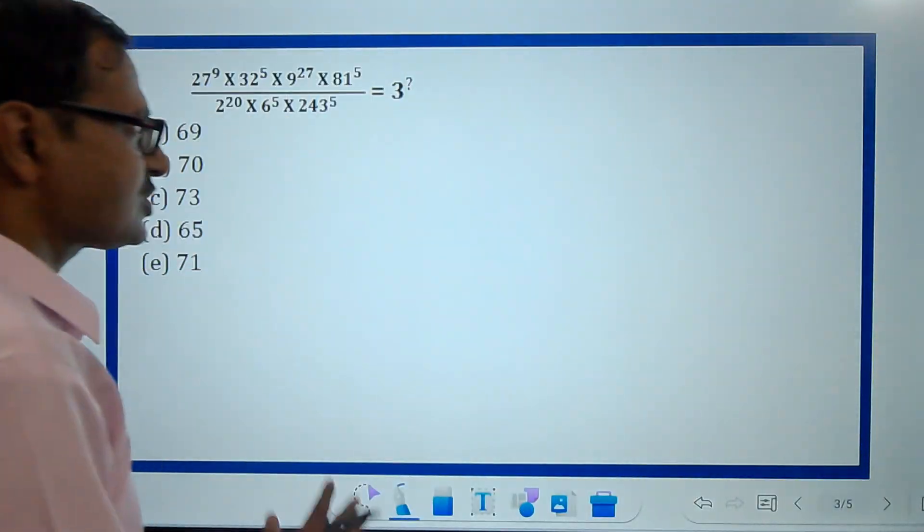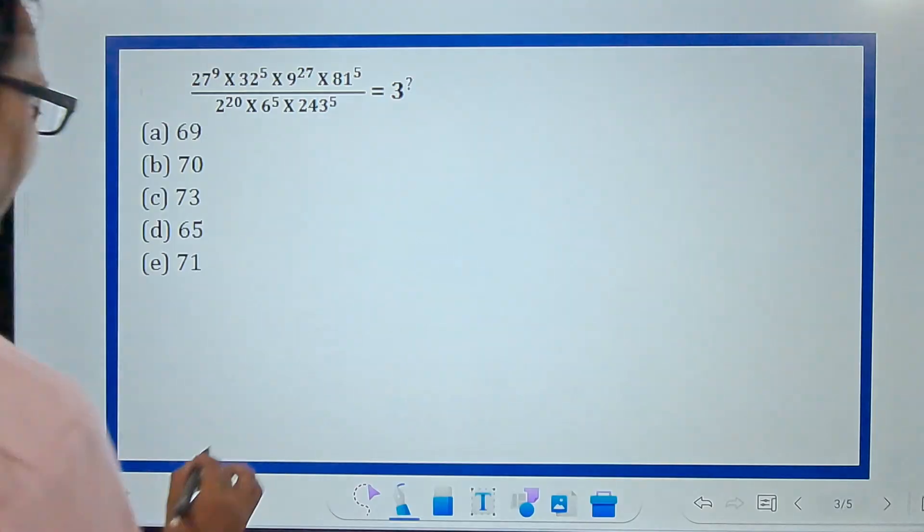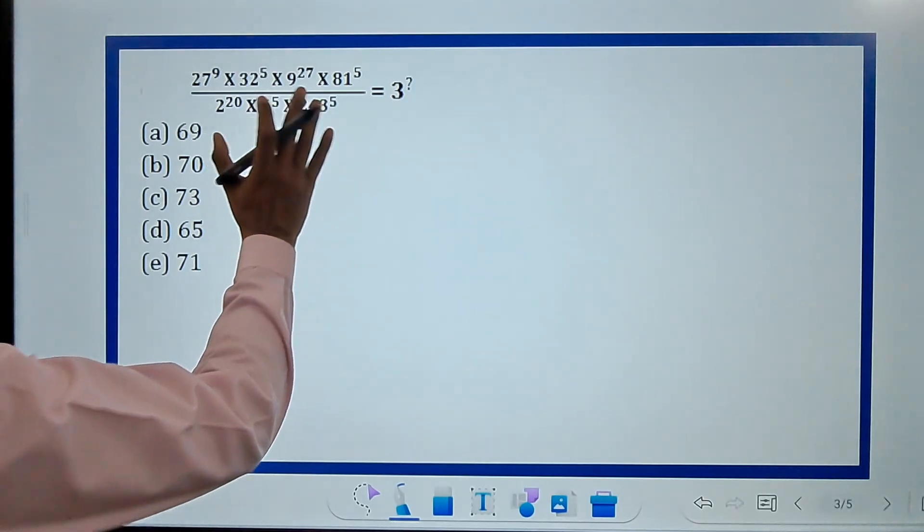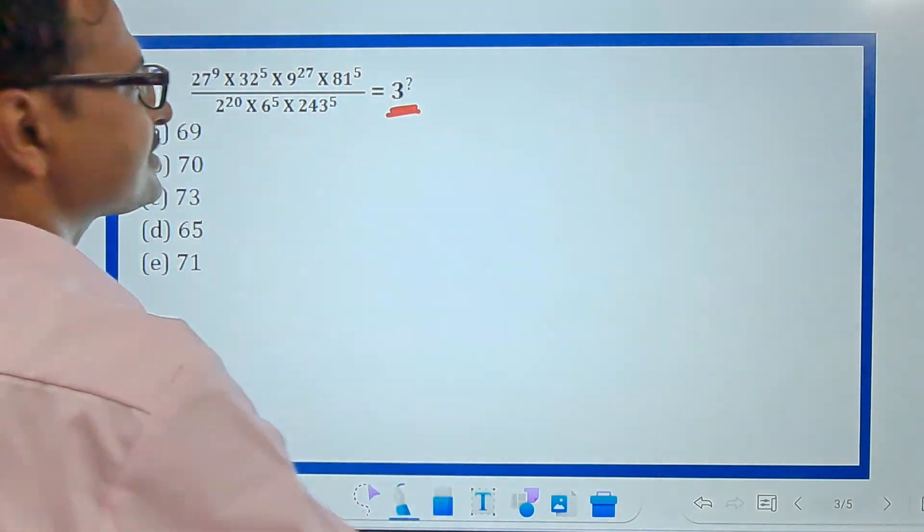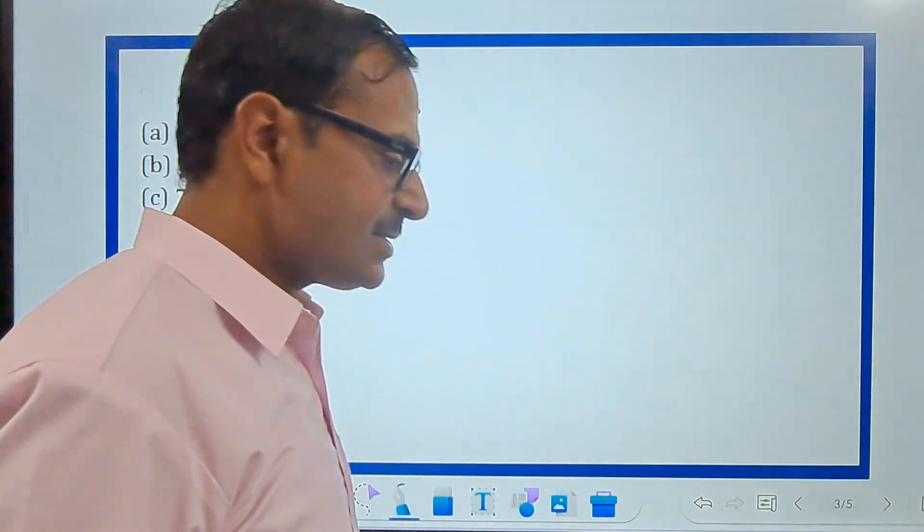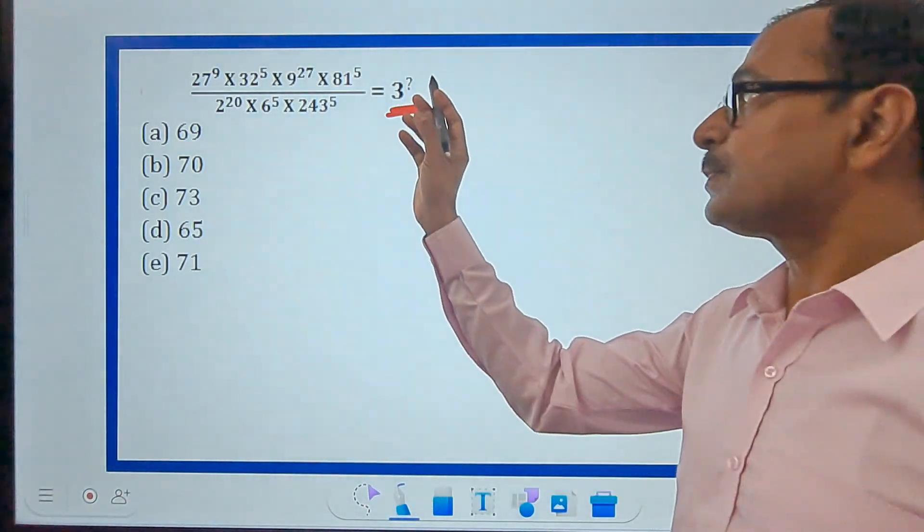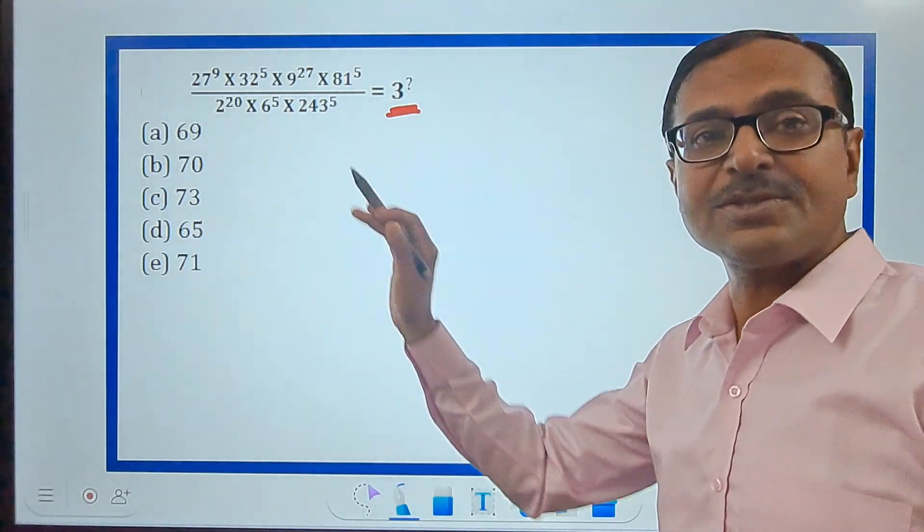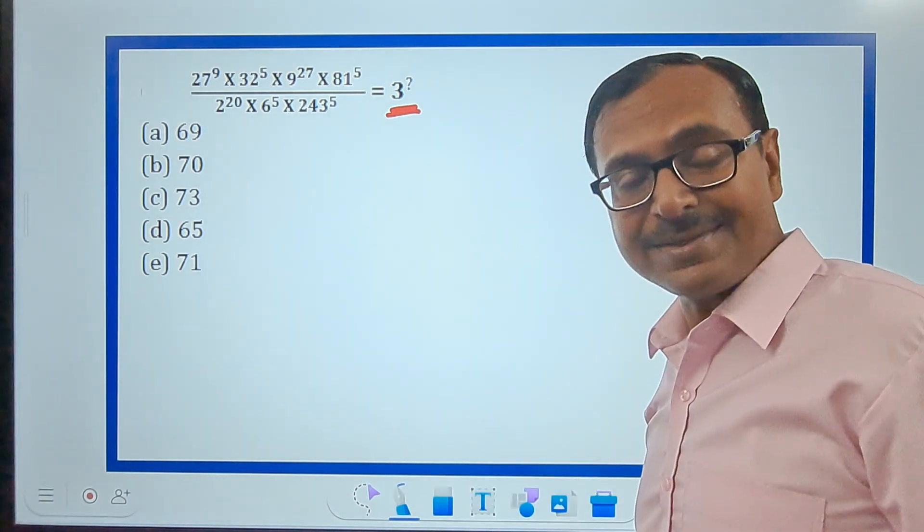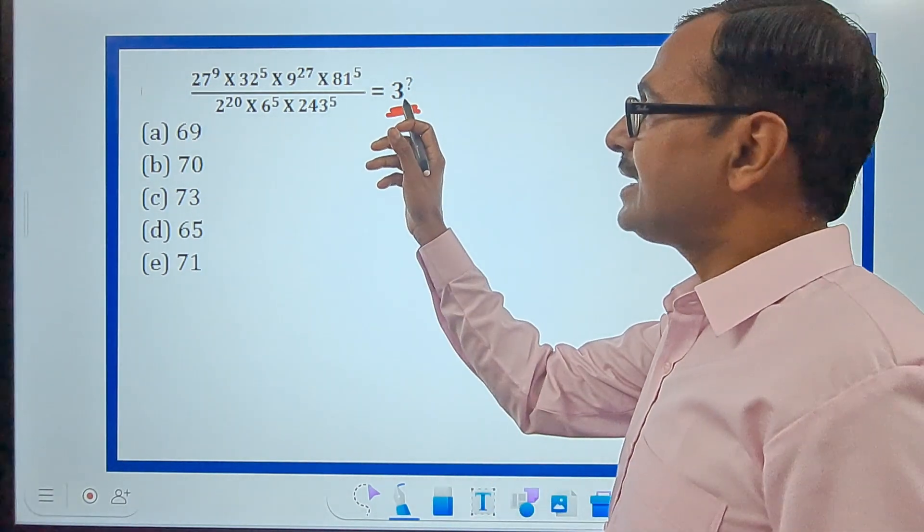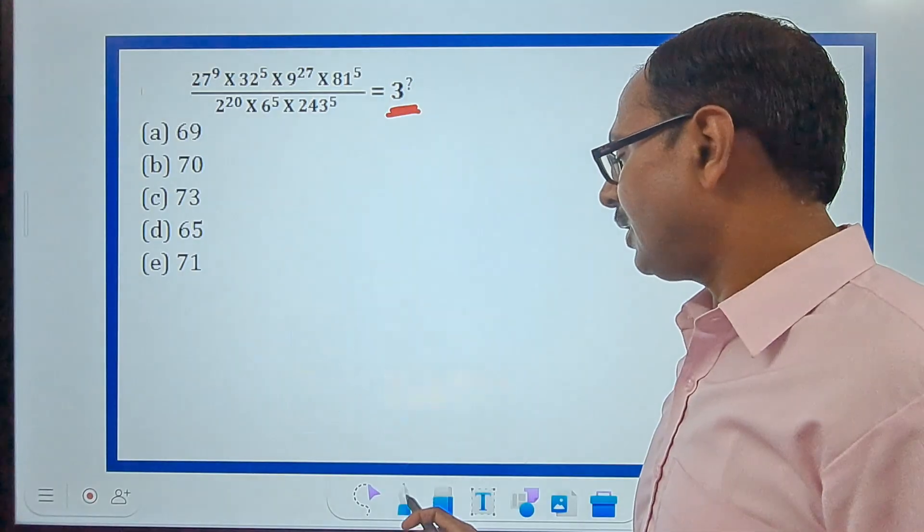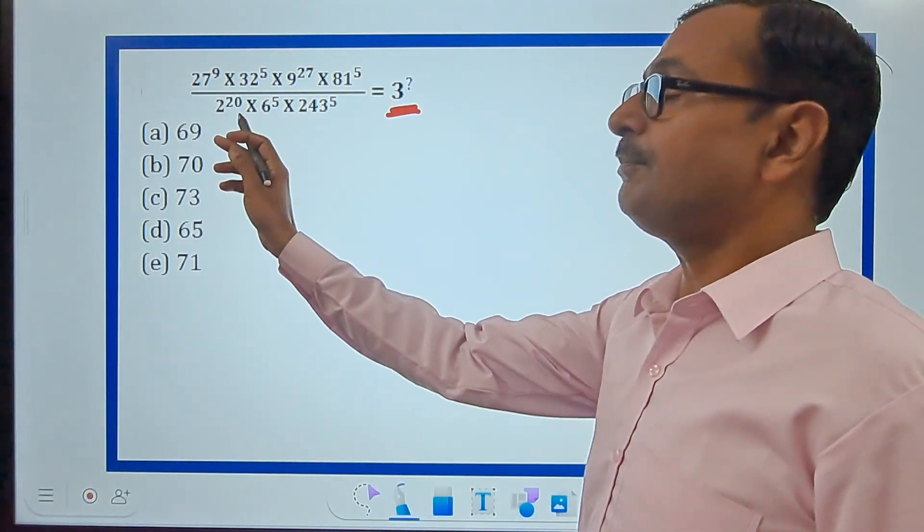Let's see the first question. Here we have lots of exponents, and you need to be really smart to solve this. We have 3 raised to power something, so on the left hand side everything should be converted to 3 raised to power only. We can only find a variable in the exponent when you have the same basis on both sides. Apart from 3 as the base, whatever we have will have to vanish.